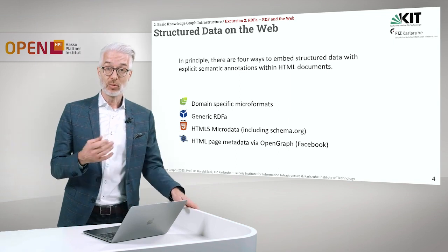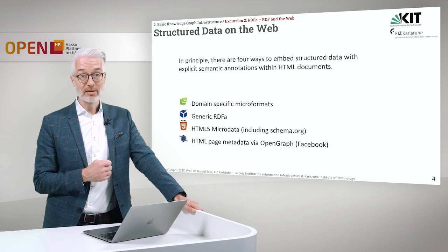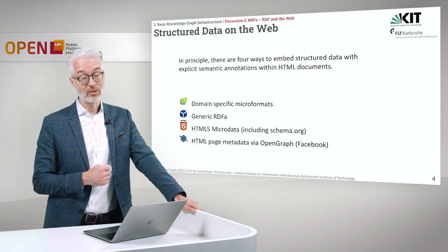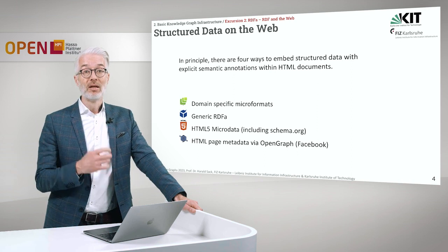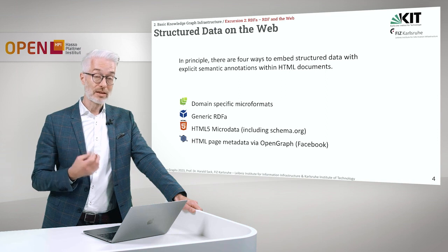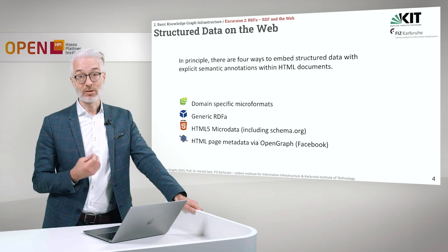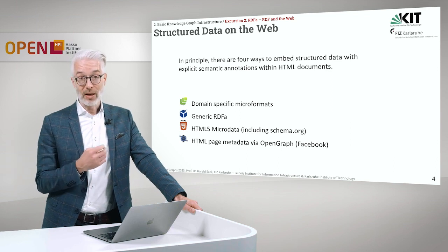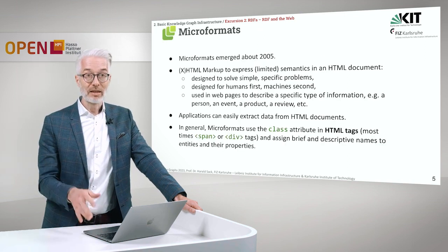We have generic RDF-A, which we will talk about soon. There is also HTML5 microdata — for example, schema.org, issued by Google. And there is also HTML page metadata via OpenGraph, which comes from Facebook. By these methods you can introduce structured data and give meaning by referring to standardized metadata structures like schema.org or OpenGraph. However, RDF-A is generic — you can use any arbitrary schema you can think of. So let's have a quick tour.